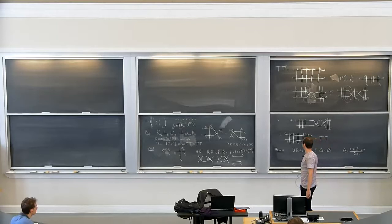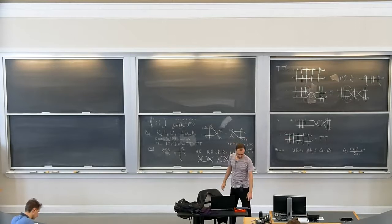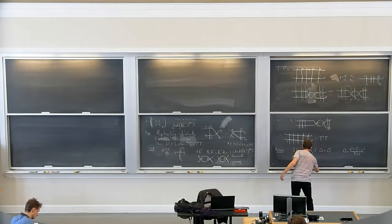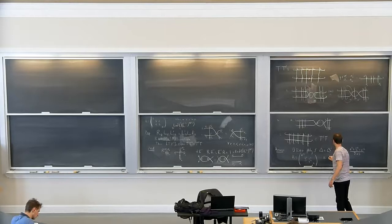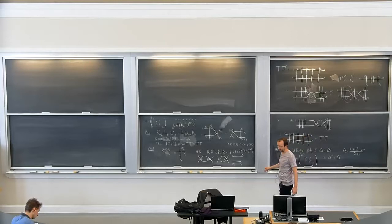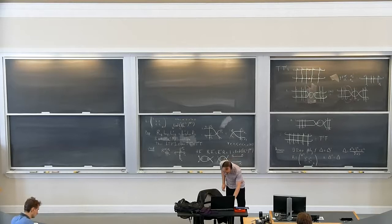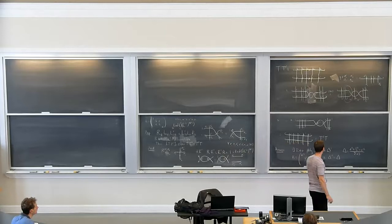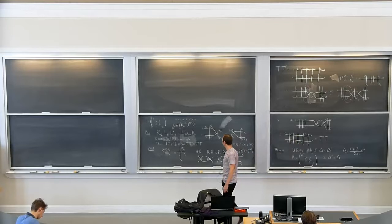There's more: assuming R is of the six-vertex form with weights a double prime, b double prime, c double prime, you find that δ double prime also equals δ. That means these numbers are the same whether you use a, b, c or a prime, b prime, c prime, or a double prime, b double prime, c double prime. The question then is how to reparameterize in a better way — we have too many labels on the diagram already.